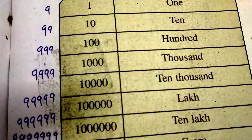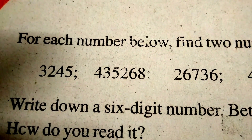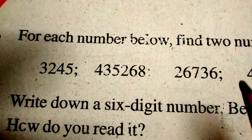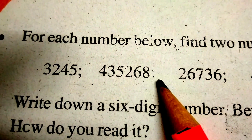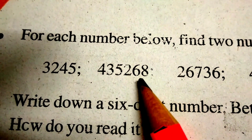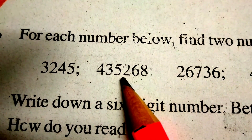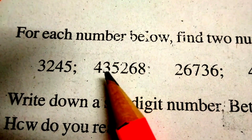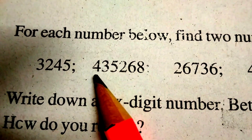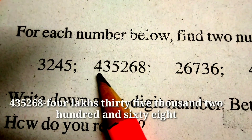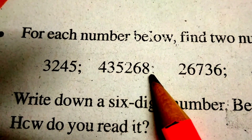Now the number is 4, 3, 5, 2, 6, 8. The place values are: 8 ones, 1 ten, 6 hundreds, 200, 5 thousands, 3 ten-thousands, 4 lakhs. Then the number is 4,035,268.